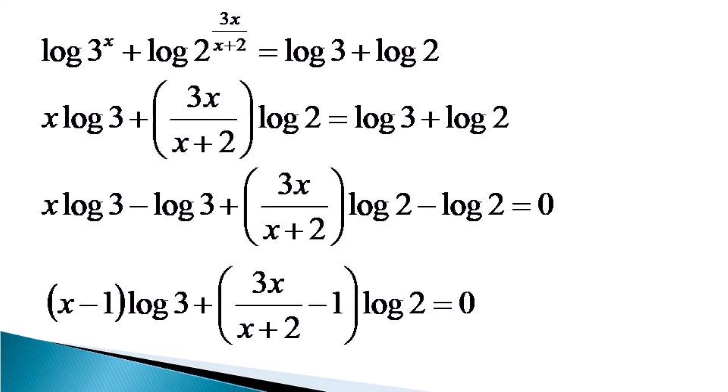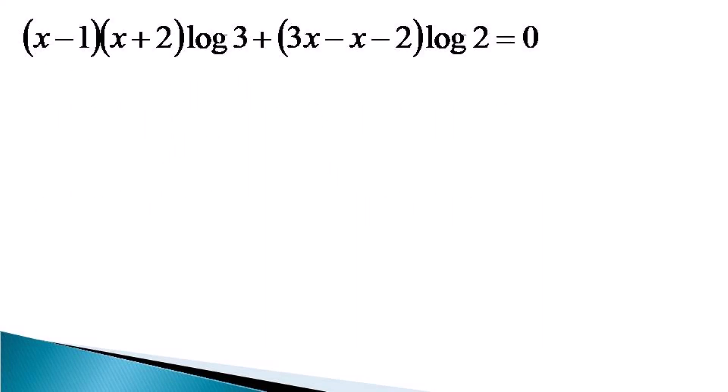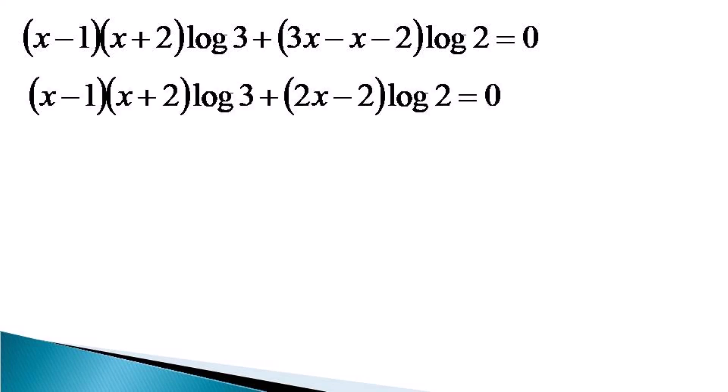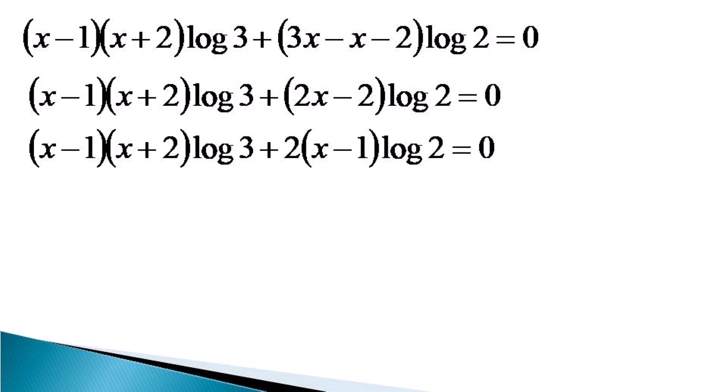Now we multiply this equation on both sides by x plus 2 to get: x minus 1 times x plus 2 times log 3, plus 3x minus x minus 2 times log 2. The second term is further simplified as 2x minus 2 times log 2, and we take 2 common, giving: x minus 1 times x plus 2 times log 3, plus 2 times x minus 1 times log 2, equal to 0.